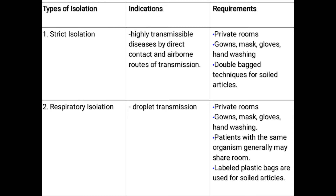Respiratory isolation is used for diseases transmitted through droplets. These diseases are transferred through droplet spread — when a patient breathes, coughs, or speaks, droplets can transmit the disease to others. Respiratory isolation requires patients to be placed in a private room and masks are required for all who enter.